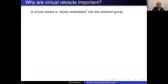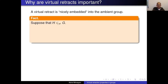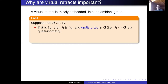Let me mention why virtual retracts are interesting and important. One reason is that they are nicely embedded in the group. If the group is finitely generated, then any virtual retract is also finitely generated — it's an image of a finite index subgroup. It's also undistorted in the word metric, meaning it is quasi-isometrically embedded in the group.